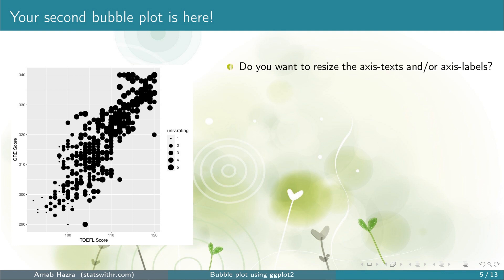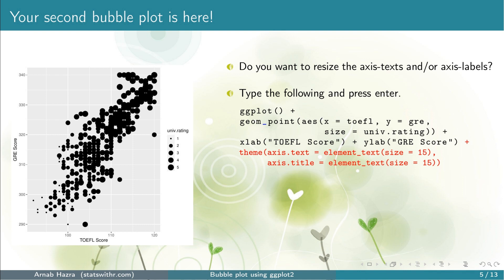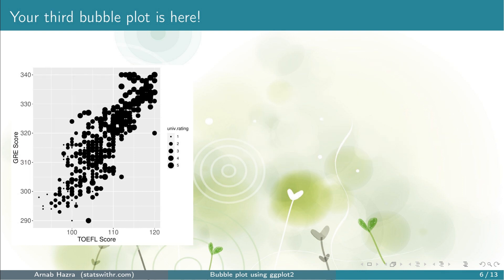Next, note that the axis texts and axis titles are quite small. To enlarge them, add the line theme with axis.text = element_text(size = 15) — this increases the font of the axis text — and axis.title = element_text(size = 15) — this increases the font of the axis titles. If you don't want one or two of them, you can remove that line. The larger the size you want, fix a larger number and choose accordingly. Press enter and you get your third bubble plot with enlarged axis texts and titles.